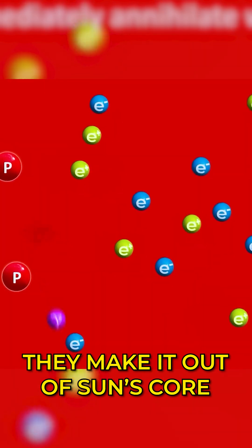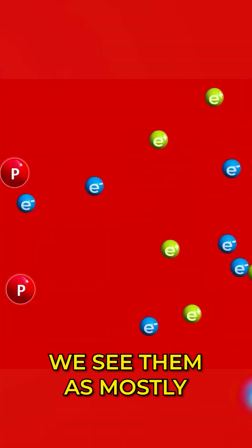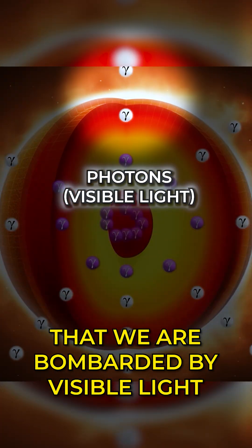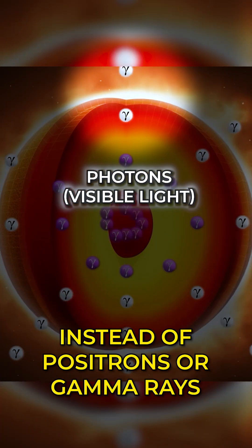But by the time they make it out of the sun's core, we see them as mostly visible light. So we should be thankful that we are bombarded by visible light instead of positrons or gamma rays.